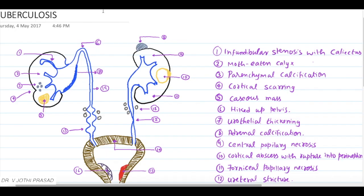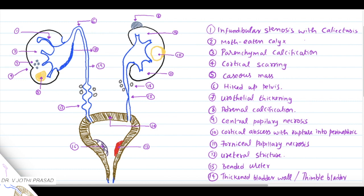This is an overview. Let's take a closer look. It's the same image with naming. The first finding is infundibular stenosis with caliectasis. As you can see here, I have depicted the infundibular stenosis with caliectasis - there is stenosis in the infundibulum with dilatation of the caliectasis.